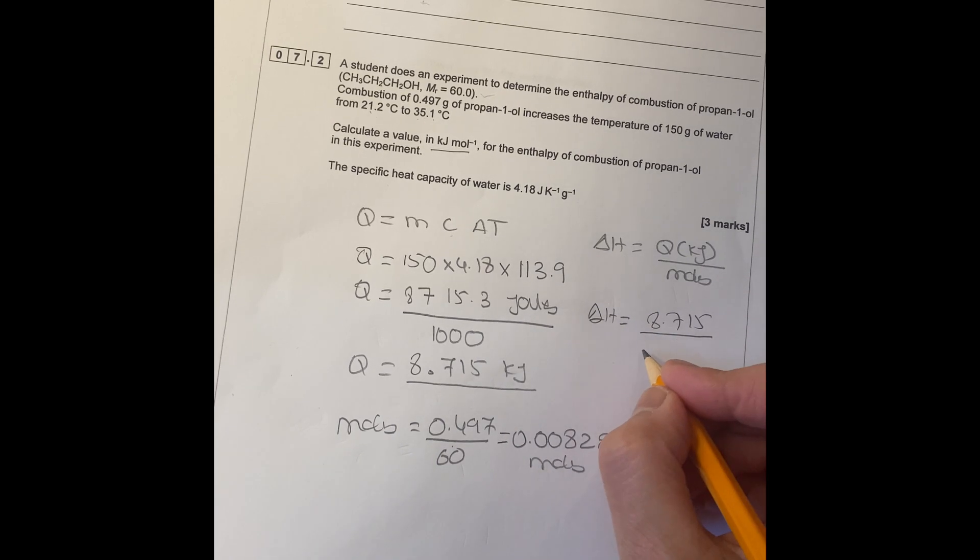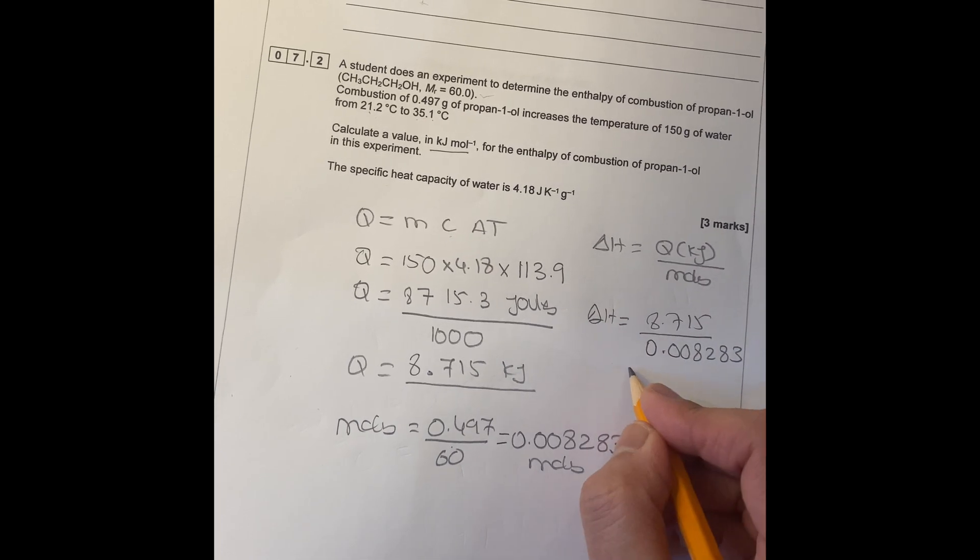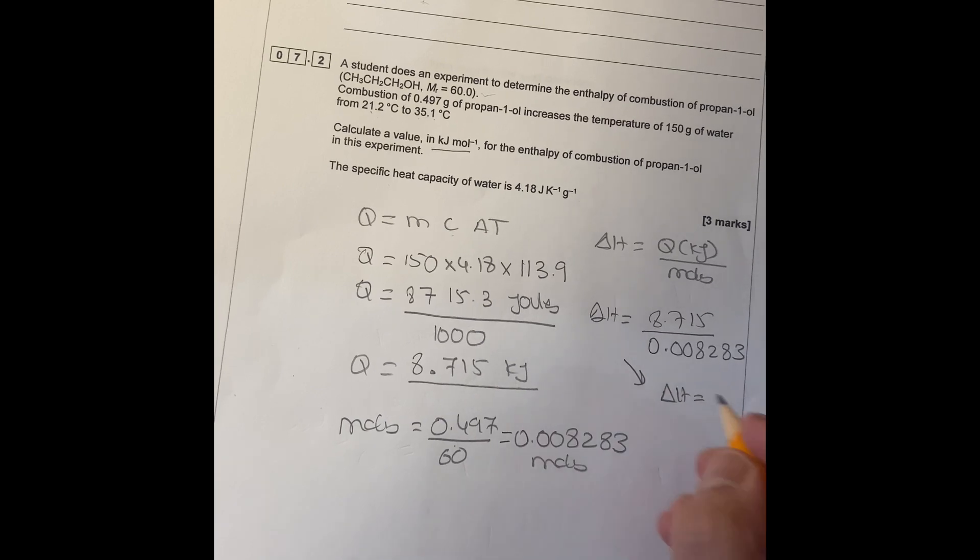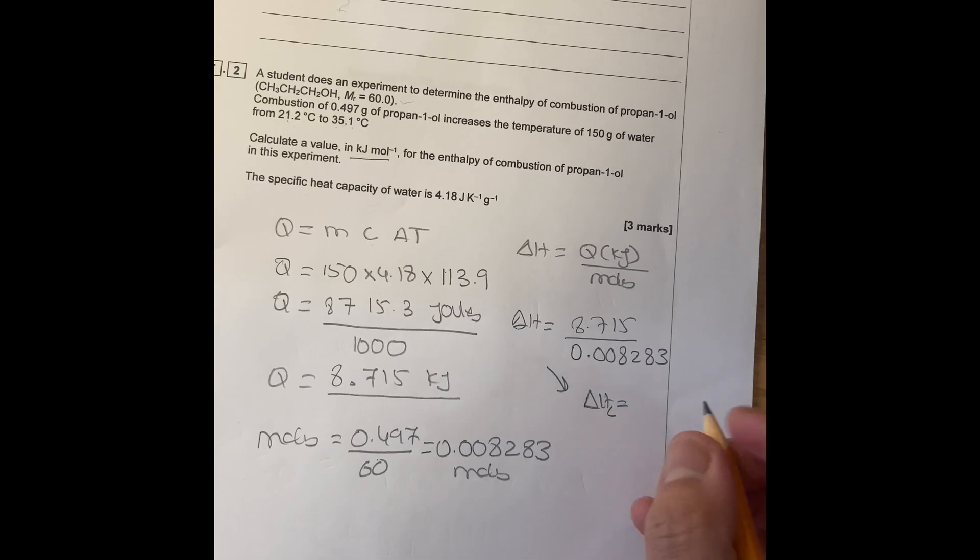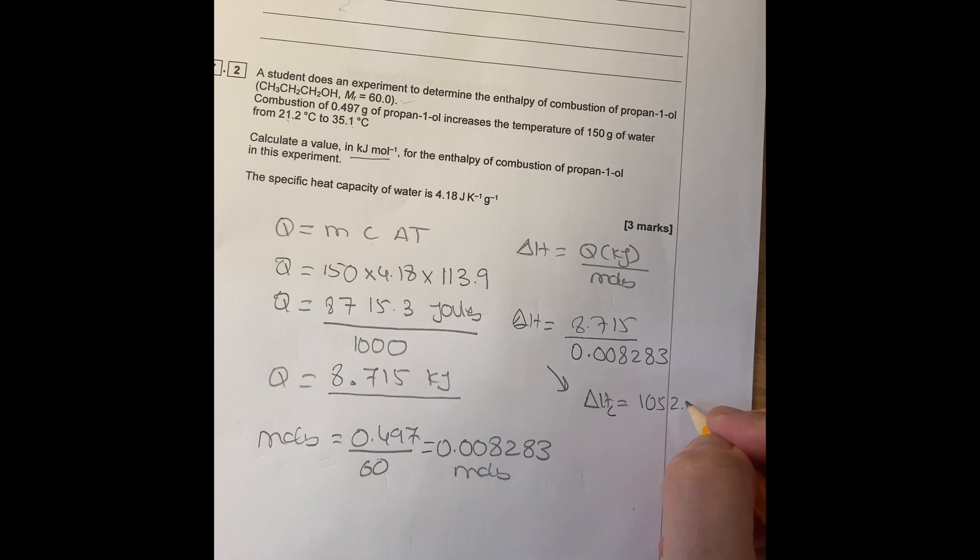So we got the moles now, so it's going to be put in this equation 0.008283. So that will give me delta H combustion equals to 1052.2 kilojoules.